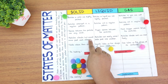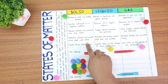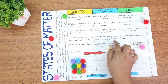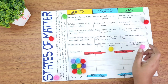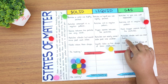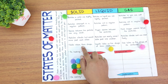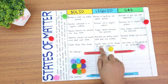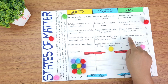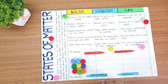In solids, particles vibrate but cannot move past each other. In liquid, particles can easily move or slide past one another. In gas, particles vibrate and can move freely. Solids retain their shape, liquids take up the shape of their container, and gas takes up the shape of its container.